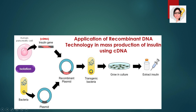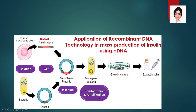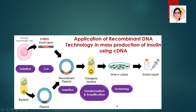We will discuss the production of cDNA later. After isolation, cutting will occur where the plasmid will be cut open and the insulin gene cut out by using a restriction enzyme. After cutting, insertion will occur where the insulin gene will be inserted into the plasmid by using DNA ligase to form a recombinant plasmid. Then transformation and amplification will occur where the recombinant plasmid will be transformed into the bacteria, the bacteria will be amplified into many clones and cultured in a medium, and a screening step will occur where recombinant bacteria will be selected.